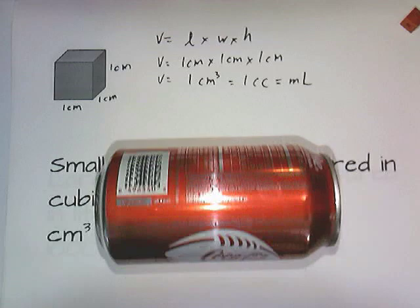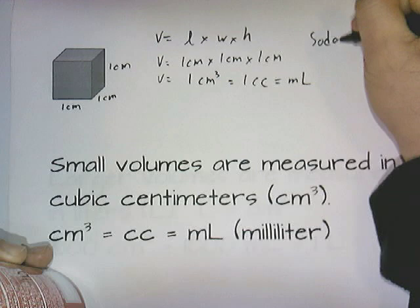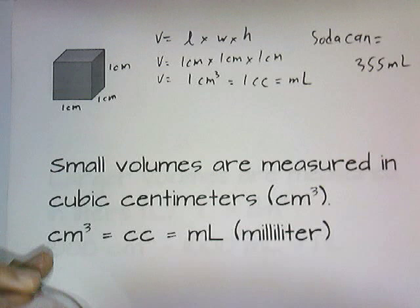A soda can is about 355 cubic centimeters, so a soda can is about 355 milliliters or cubic centimeters.